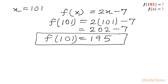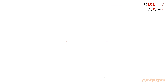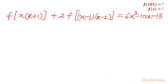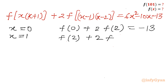Now I will cross-check our answer. The function we calculated is f(x) = 2x - 7. Let me write the original equation and plug in x = 0: f(0) + 2·f(-2)·(-2) ... simplifies to f(0) + 2·f(2) = -13. Now plugging in x = 1: f(2)·2 + 2·f(0) = -17. So we have two equations: f(0) + 2·f(2) = -13 and 2·f(2) + 4·f(0) = -34.